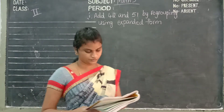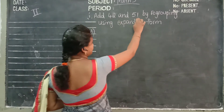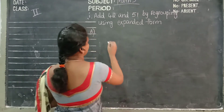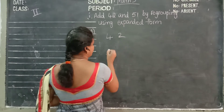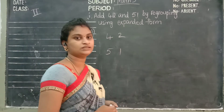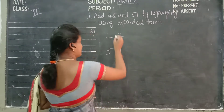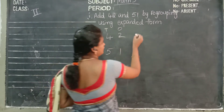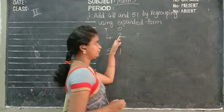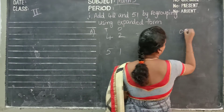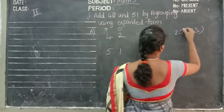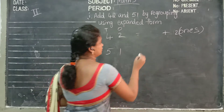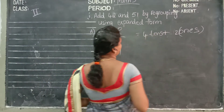We change to expanded form. See, add 42 and 51 using expanded form. 42 and 51: 2 and 1 — which place value? 1's place. 4 and 5 — which place value? 10's place. So children, 2 is in 1's place. 4 is in 10th place — 4 tens. 1 is in which place? 1's. 5 is in which place? 10th.